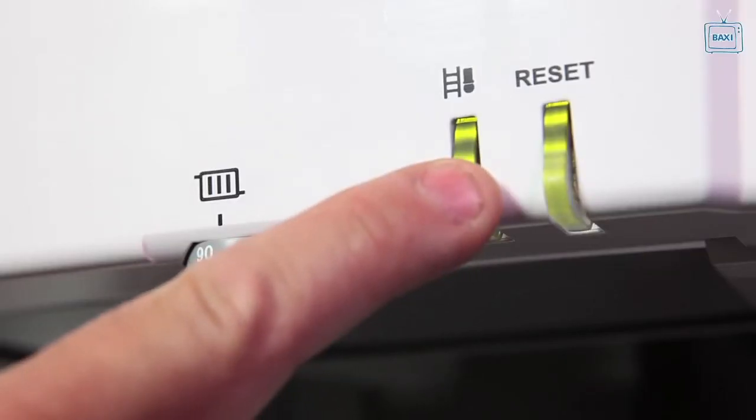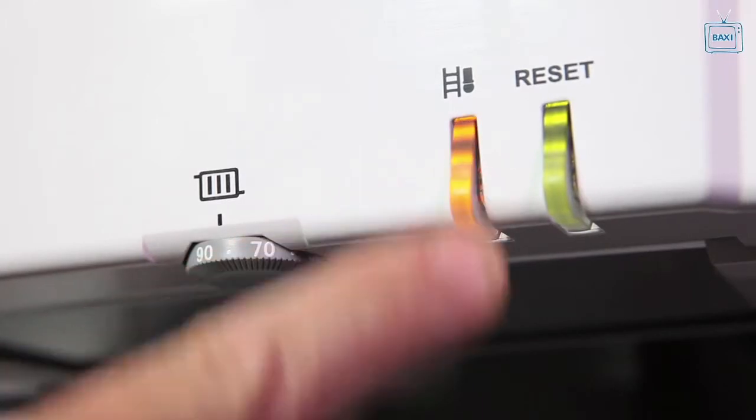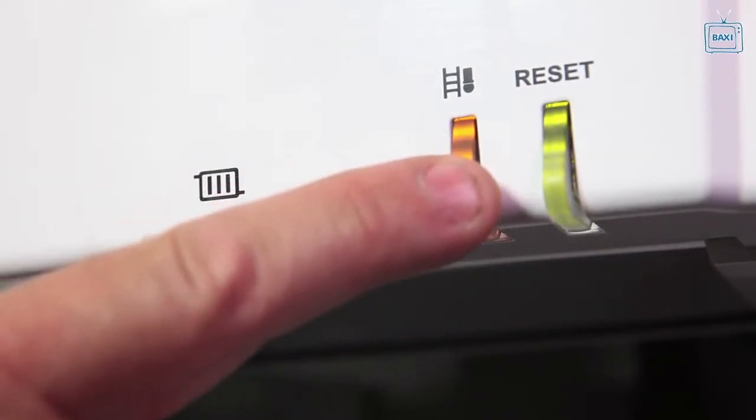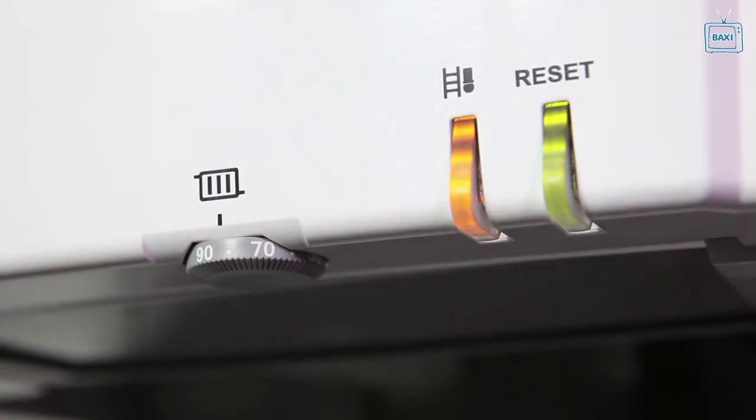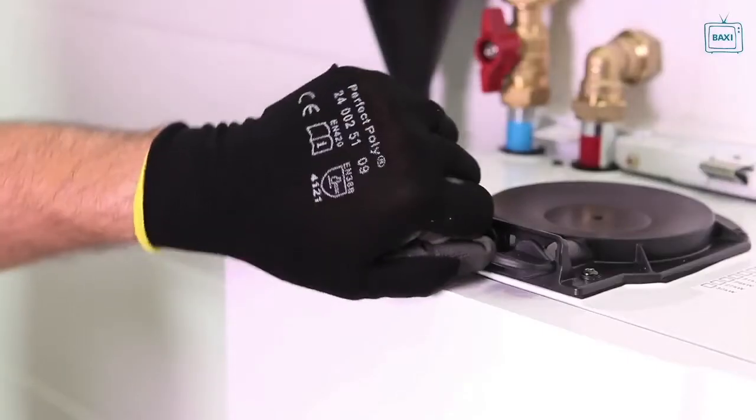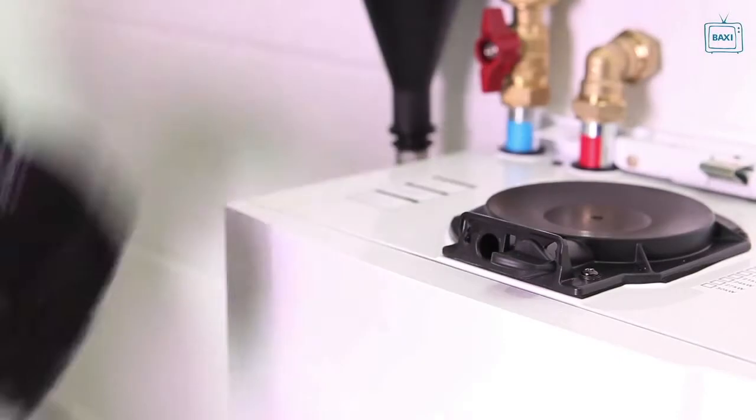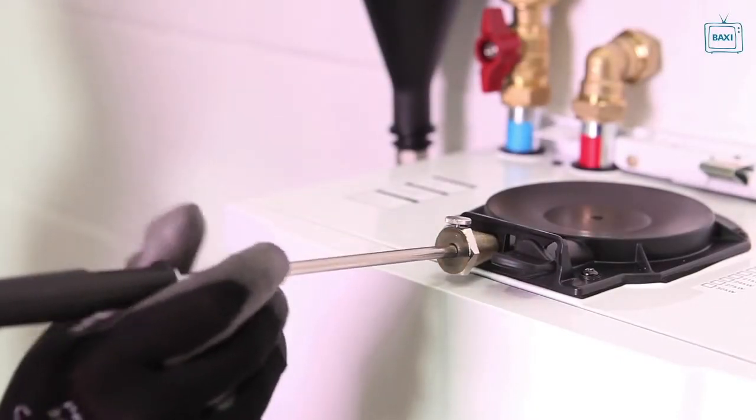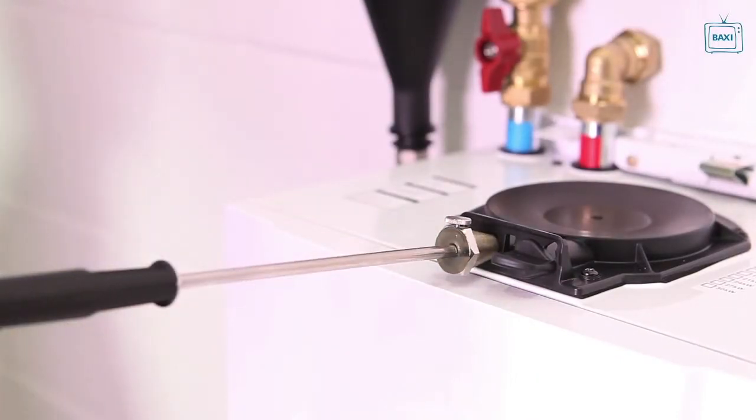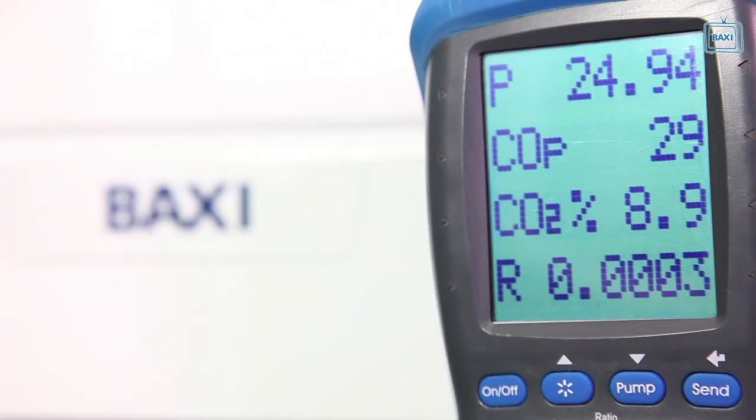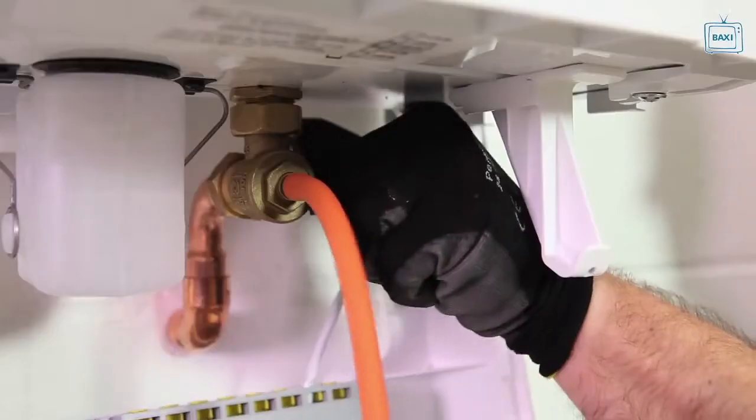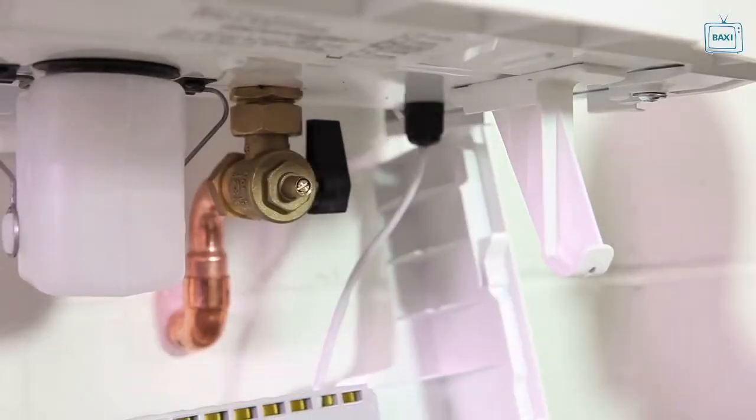Next, set the boiler to the minimum rate and allow the combustion to stabilise. Insert the analyser probe into the flue gas test point, allowing the reading to stabilise. A positive carbon dioxide check will give a reading of 8.9% plus or minus 0.1%. That completes the test.